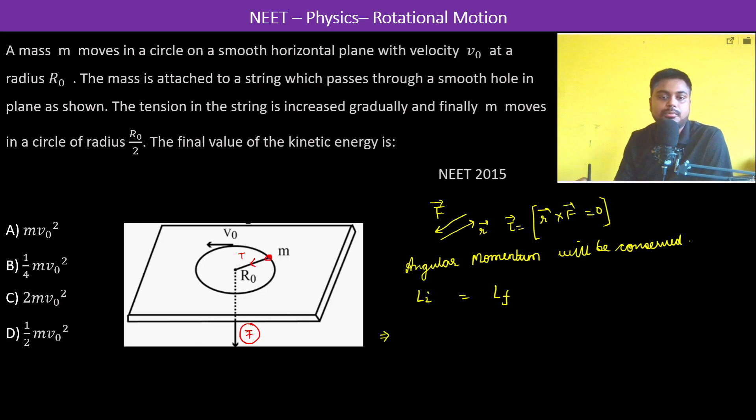What is the initial angular momentum? R cross MV. R into, with a velocity V naught and the radius is R naught. So R naught MV naught. This is the initial.